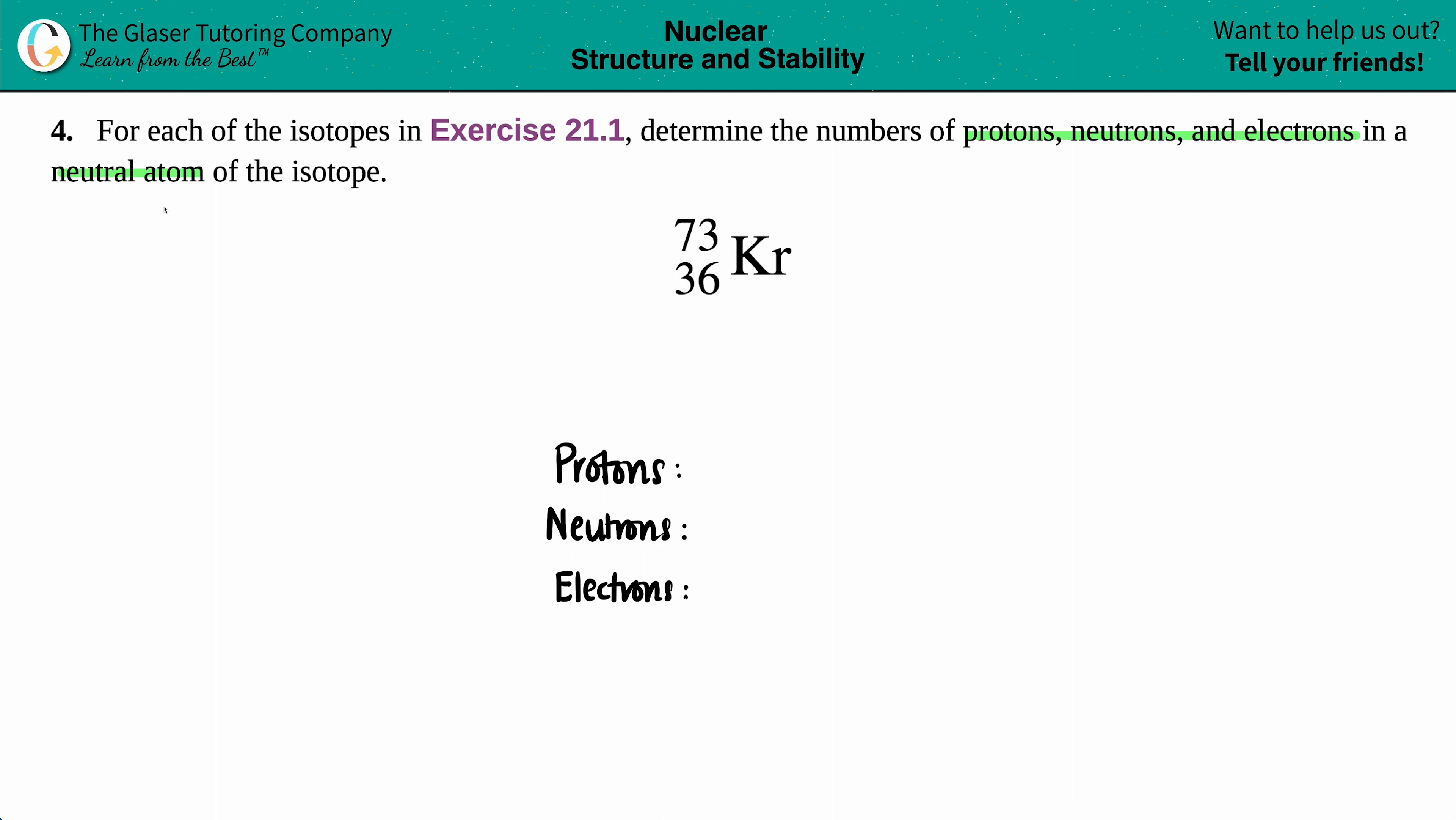Now the first thing that I notice is that they said we have a neutral atom, and the only number in this world that has no charge—it's not positive nor negative—is zero. But these subatomic particles, some of them have charges, so in order to make something neutral we have to cancel out our charges.